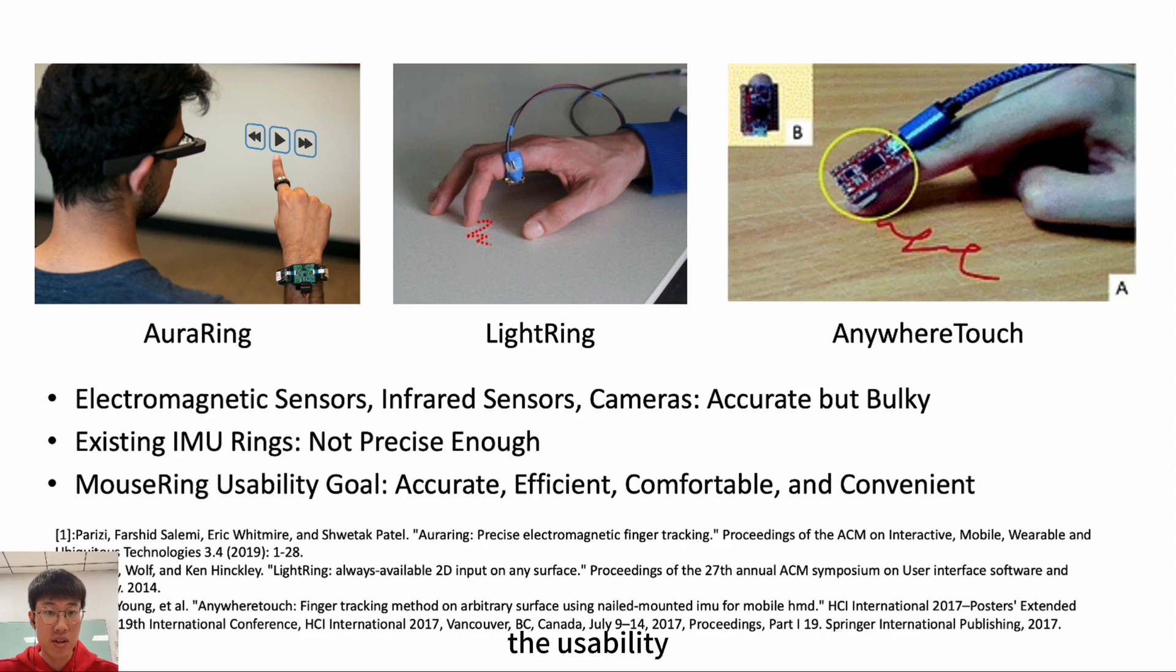On the other hand, ring interaction work using IMU sensors like InfiniTouch uses the altitude angle changes of the fingertip IMU to estimate the speed of each finger joint, but this approach is far from precise. Therefore, the usability goal of MouseRing is to enable efficient and accurate input on diverse surfaces while ensuring comfort and convenience through its always available nature.